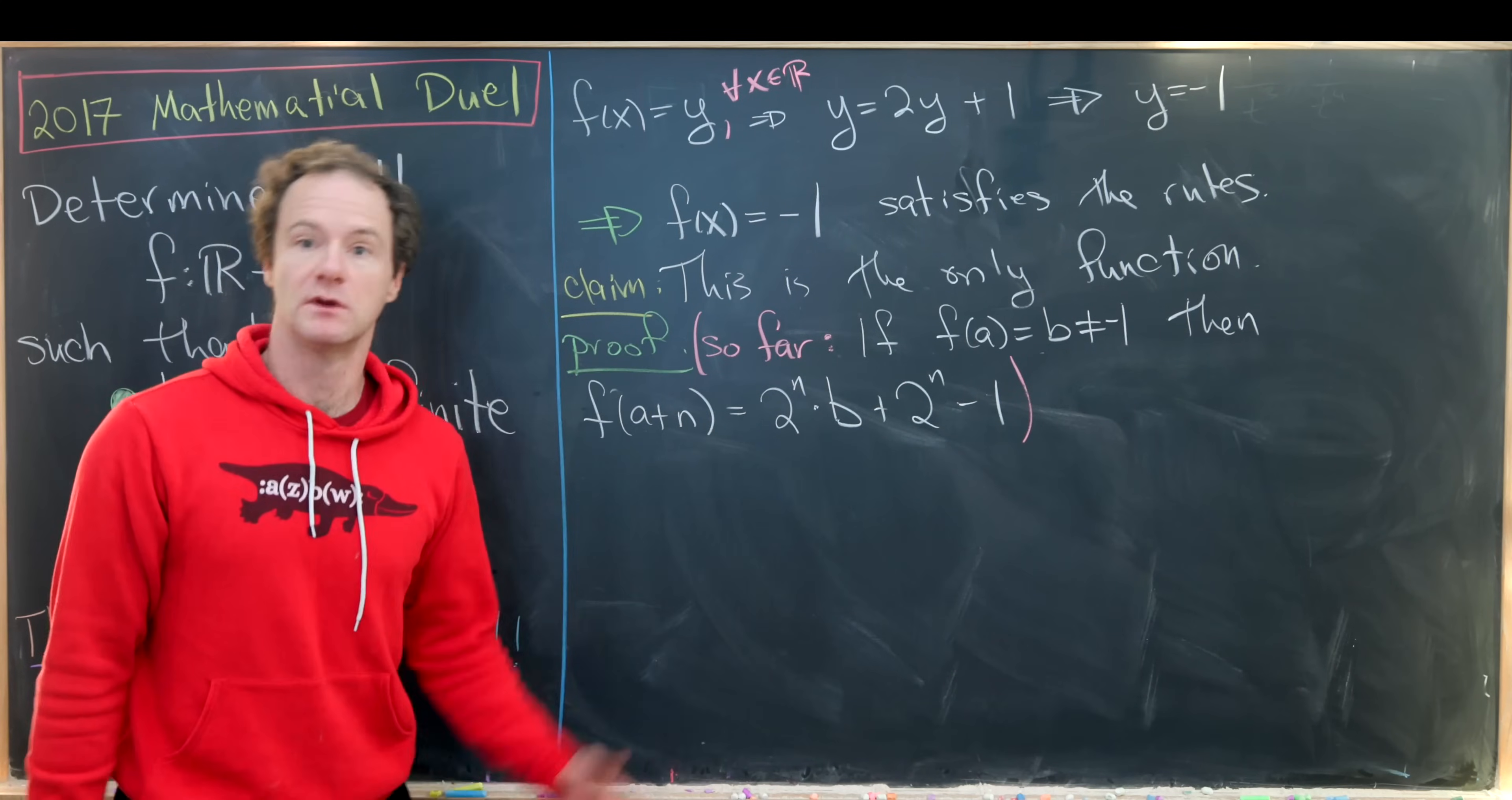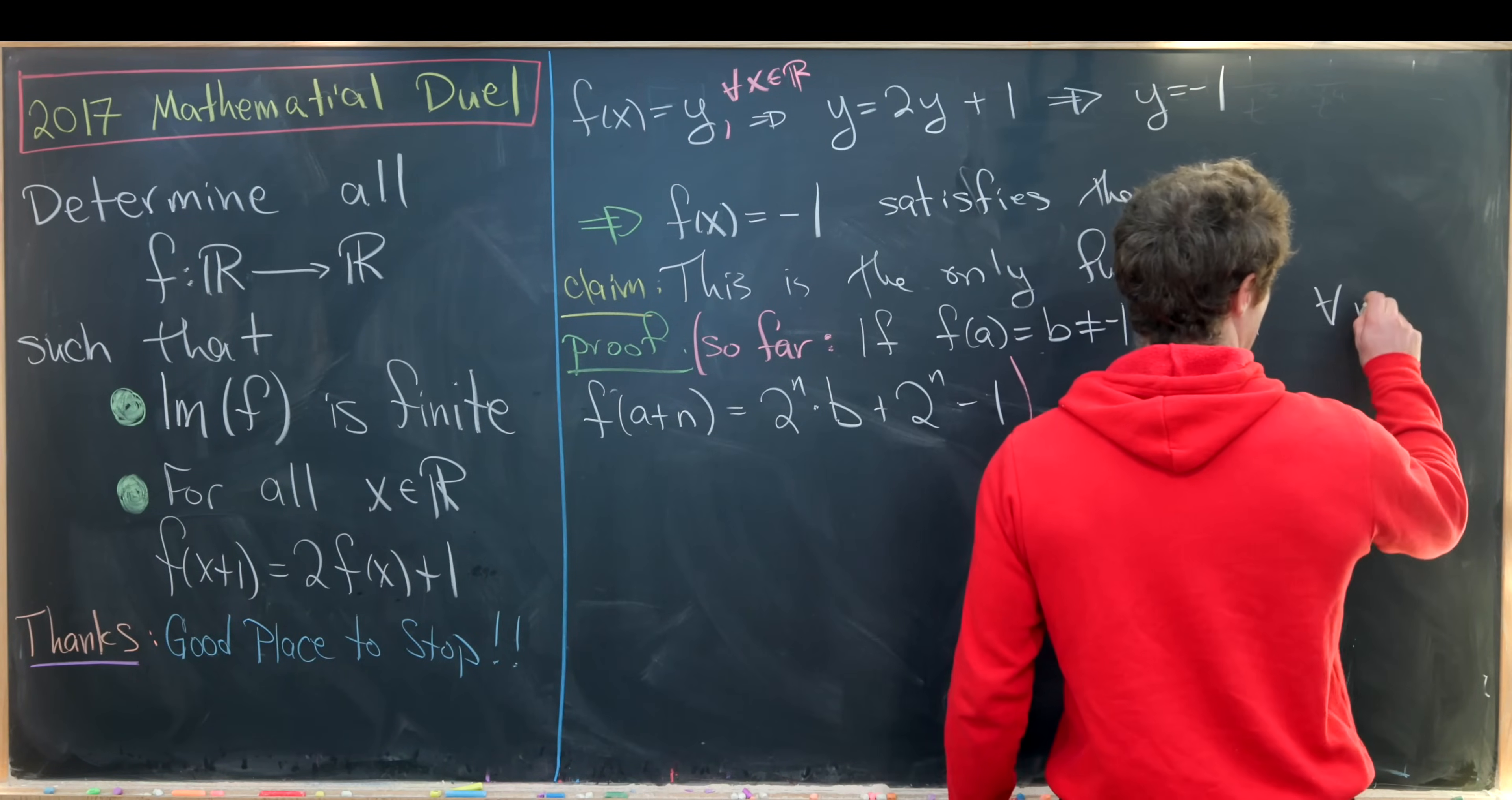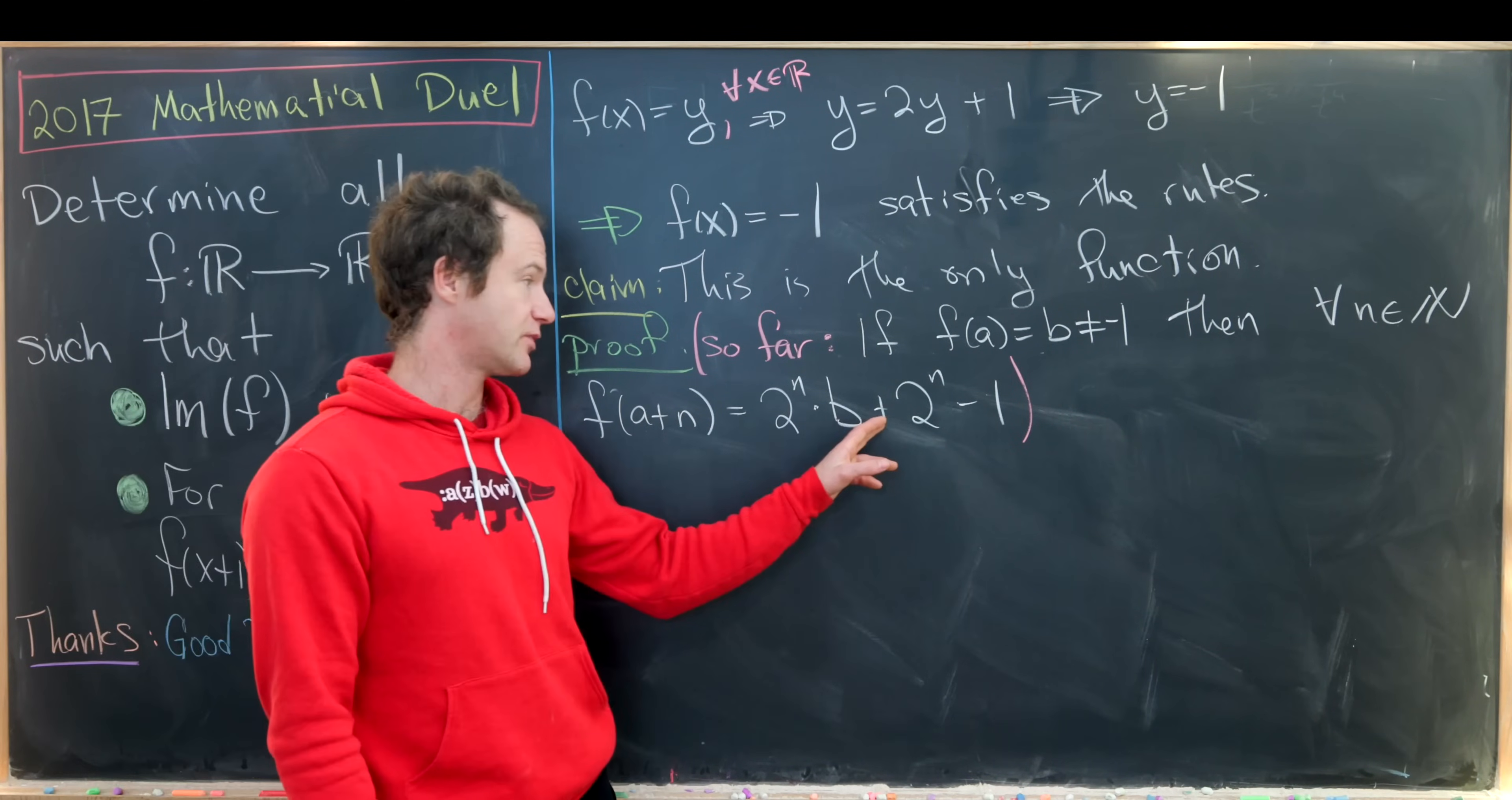to minus 1, let's say it takes on the value b at a, then for all natural numbers n, so I'll add that in here, we have f(a+n) equals 2^n times b plus